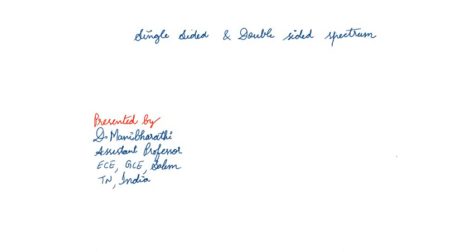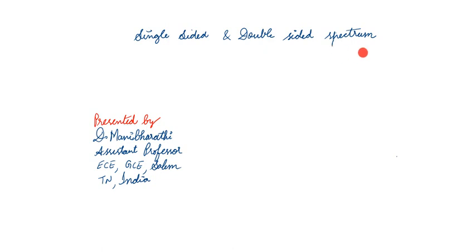Hi and hello to everyone. In this video we are going to discuss about the single-sided and double-sided spectrum. What is a spectrum? Spectrum is nothing but the frequency. If you take any signal, it is definitely made up of frequencies. So if you can see what is the amplitude of the signal at a particular frequency, what is the phase of the signal at that particular frequency, then I can say I have plotted the spectrum.